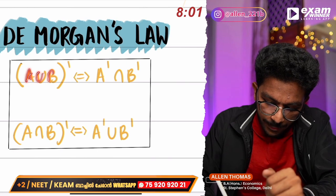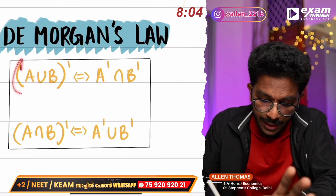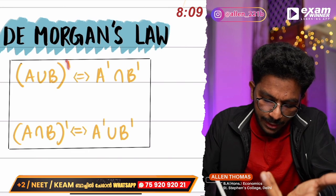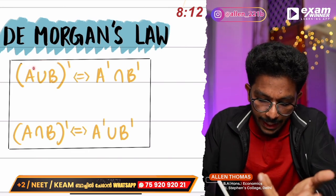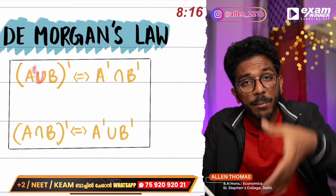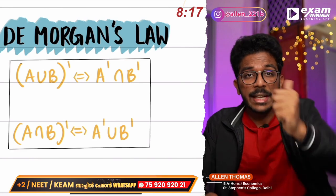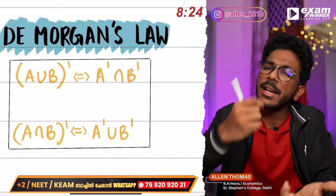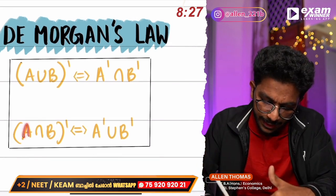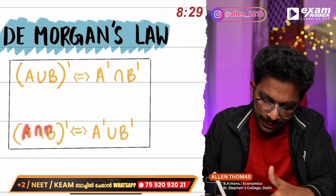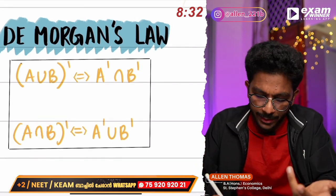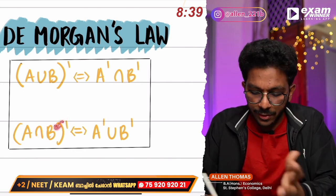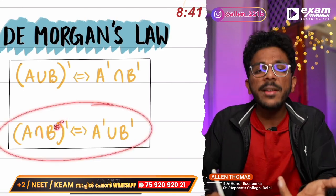A union B — take the complement. That is the first De Morgan's law: (A ∪ B)' = A' ∩ B'. This complement: A complement, and the union becomes intersection, and B becomes B complement. If you have A intersection B, then (A ∩ B)' = A' ∪ B'. That is De Morgan's law.